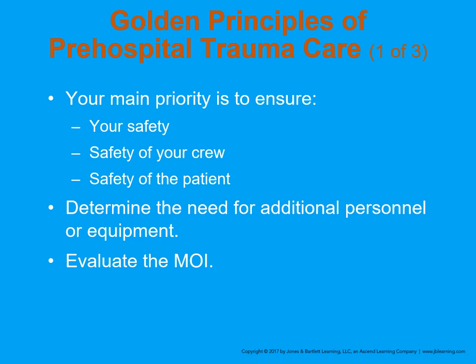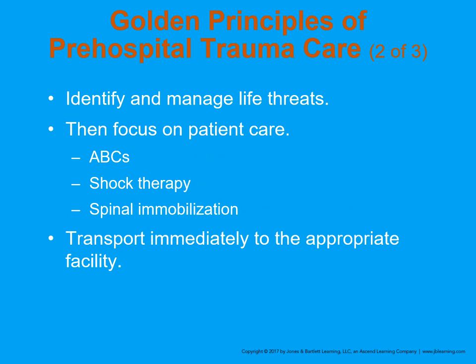We have the golden principles of trauma care. The most important things on every scene include our safety, the safety of the crew, and the safety of the patient. If the cause of the traumatic injury has not been mitigated, make sure it doesn't become a problem for us. Do we need additional people or special equipment? Are we looking at building collapse? Identify our ABCs, maintain shock therapy, remember to cover the patient — cold people don't clot. Consider whether spinal mobilization is necessary.